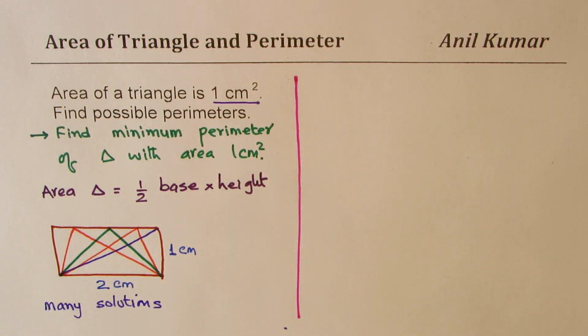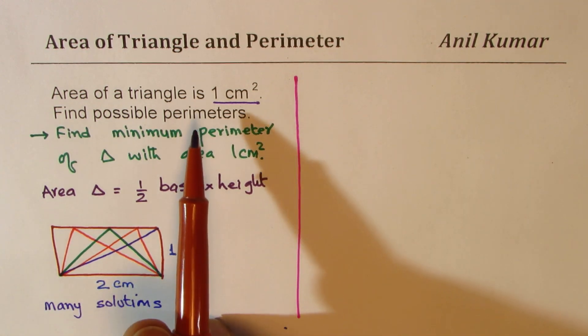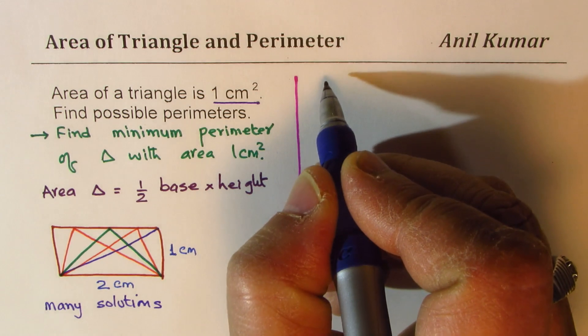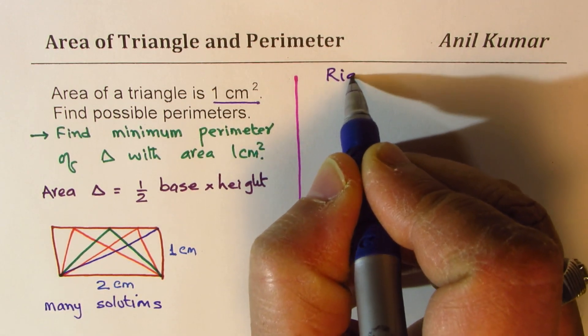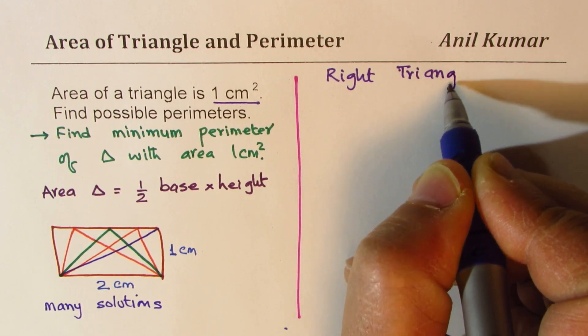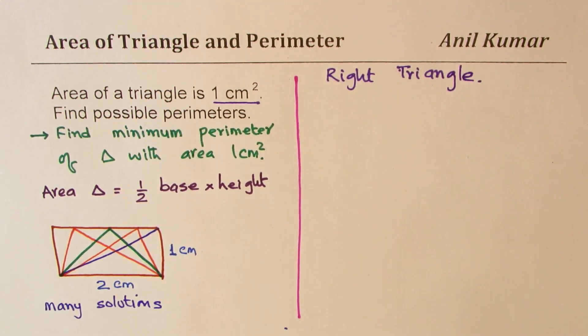Now, let's get to the specific one here, where we will now measure the perimeter also. Finding perimeter of this kind of a triangle is very difficult, but it is simpler to consider a right triangle. So as a special case, I will consider right triangle.